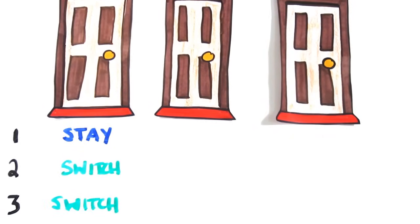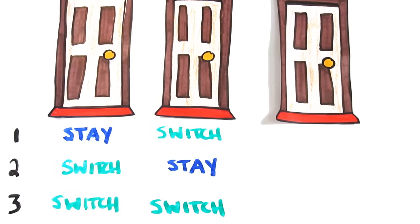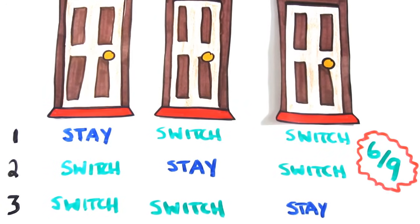Let's tally them up quickly. If it's behind door one, and you chose door one, you should stay. But if you chose door two or three, you should switch. If it's behind door two, and you chose door two, you should stay. But the other two, you should switch. Add it all up, and you should switch six out of nine times.